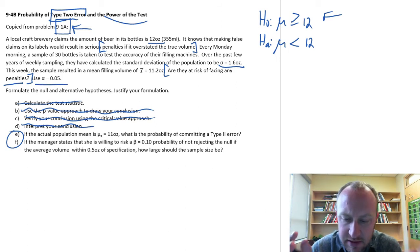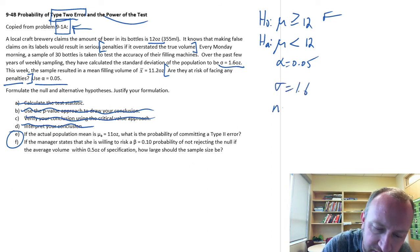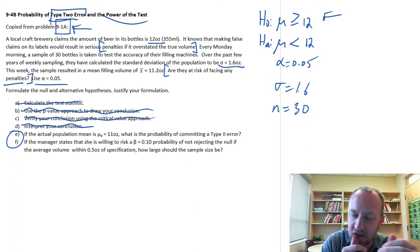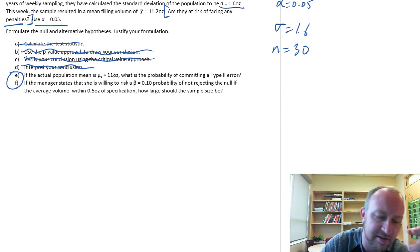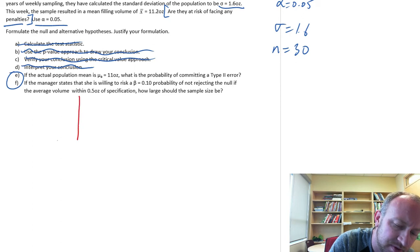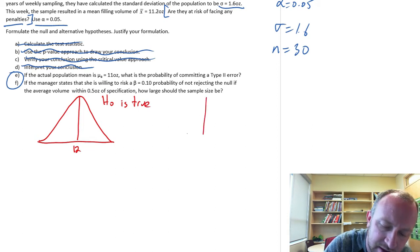We have an alpha of 0.05. Let me write down some other bits of information we'll need: standard deviation, sample size, and alpha. Now, let's step back a little bit. Remember, at the beginning of this section on hypothesis testing, we had these two distributions. We had a distribution that exists if the null hypothesis is true — with equality, mean 12 — and here we have our standard normal distribution, mean 0.